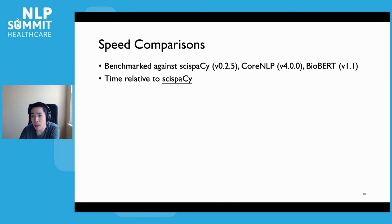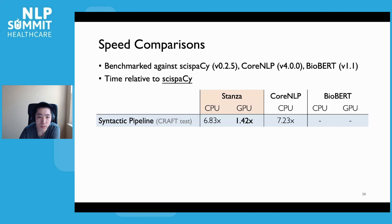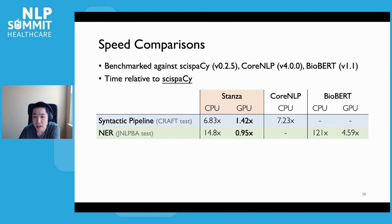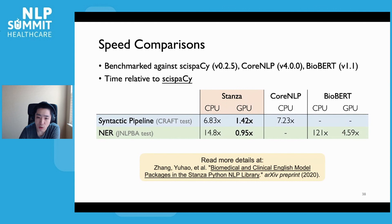Lastly, we want to understand the speed of Stanza's biomedical pipelines by comparing it against scispaCy, CoreNLP, and BioBERT. We show the speed comparison results as runtime in multiples of scispaCy's runtime. For end-to-end syntax analysis, Stanza's deep learning pipeline is slower than scispaCy on CPU, but on par with it when GPUs are available. For NER, Stanza's biomedical models are even slightly faster than scispaCy's models when GPUs are used, and are much faster than the BioBERT models. For more details on how we created these models, we encourage you to check out our system description paper on arXiv.